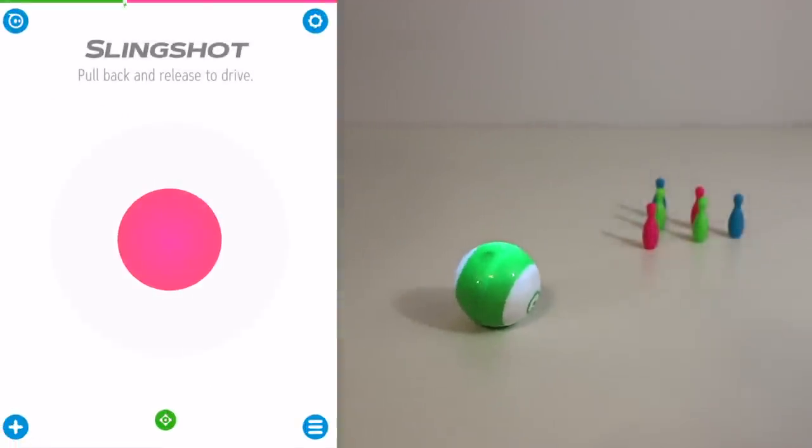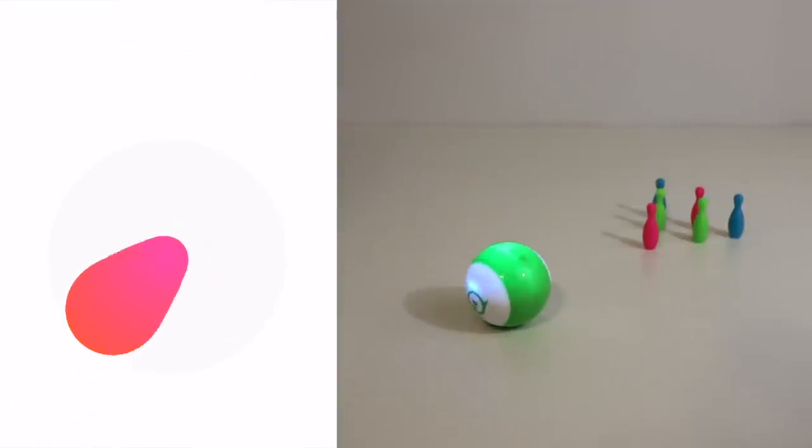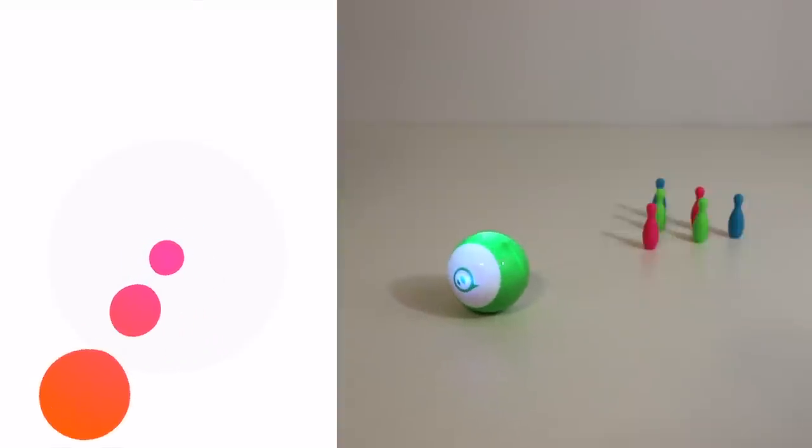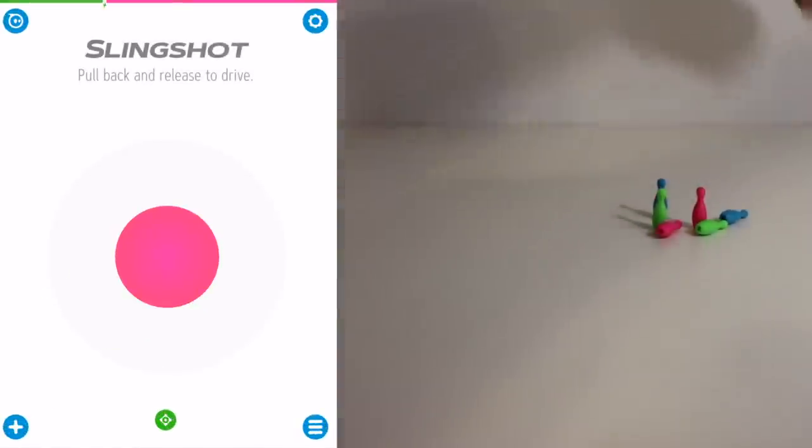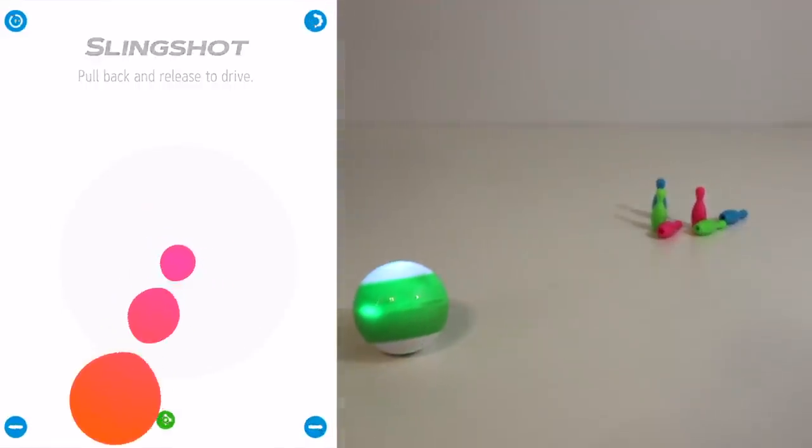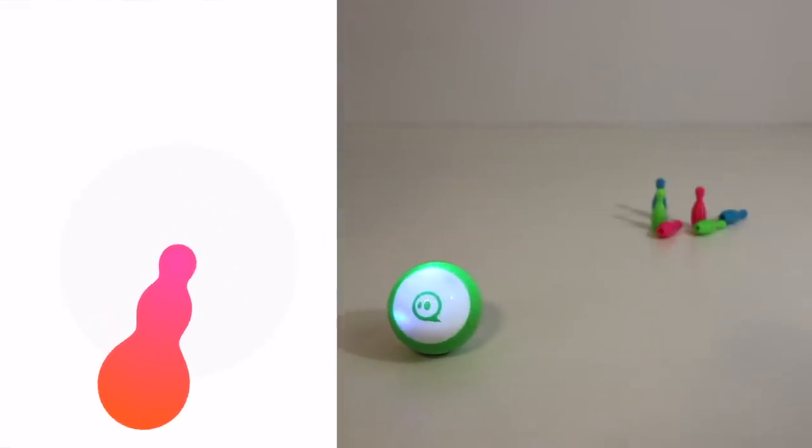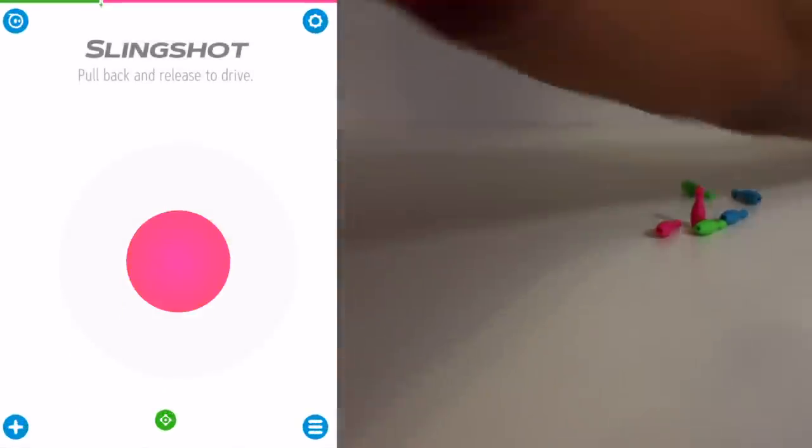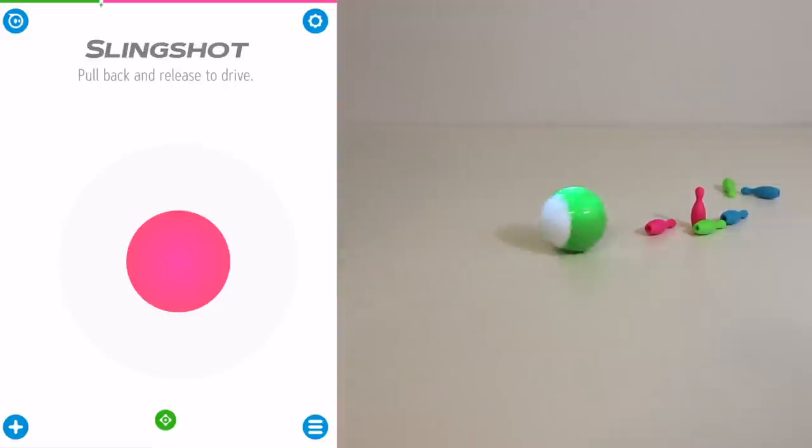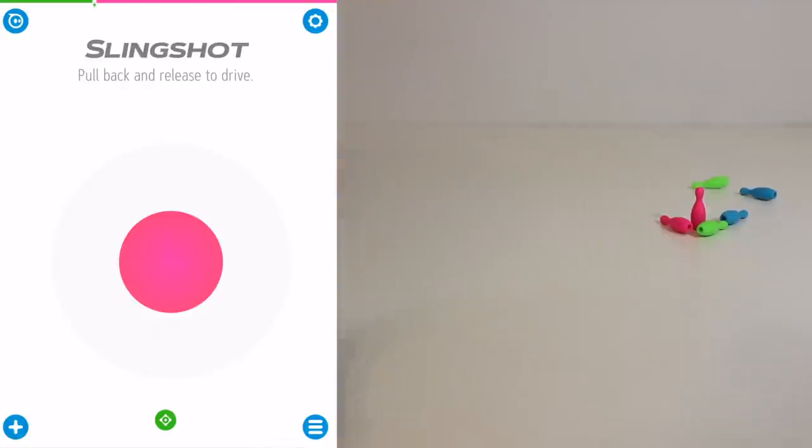Now, slingshot is literally what it is. As you pull it back and you release it, and depending on how far you pull it back, will depend on how fast it goes. So, if I go really fast, and let's see if we can go ahead and hit these pins here. Oh! So you see I didn't hit them all that time. So, let's try that again. So you know, depending on how far back you pull it, it will go that much resistance. So, it kind of gives you an idea on how that works.